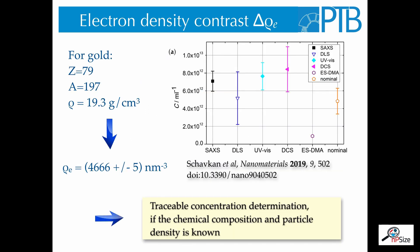Now, the electron density contrast can be calculated for each material, but it is a material property of the nanoparticles. For example, for gold, we know the number of electrons, we know the atomic weight and the density, and from that we can compute the number of electrons per volume. This has to be done for each material individually, and we need to know the density of the particles. On the right-hand side, you can see a comparison where the concentration has been measured using this method with other methods. In the end, a traceable concentration determination is possible if the chemical composition and the particle density is known.